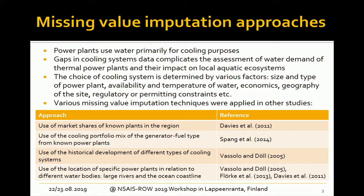There have been other approaches to imputing those missing values. A very common one is using the market share — if you know a country uses 50% cooling towers and 20% dry cooling, for power plants where the cooling type is unknown, you simply assign them according to those existing market shares.